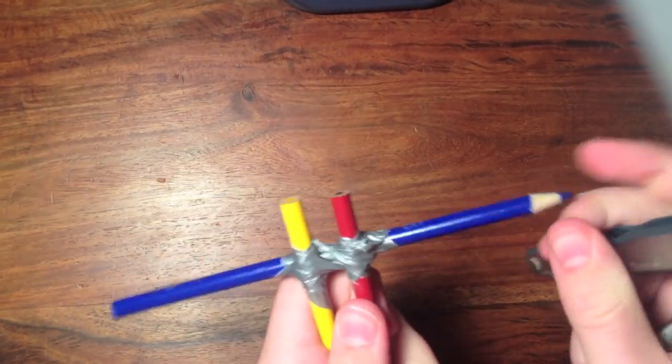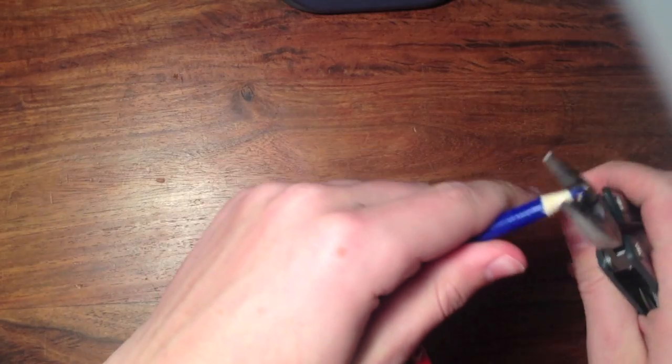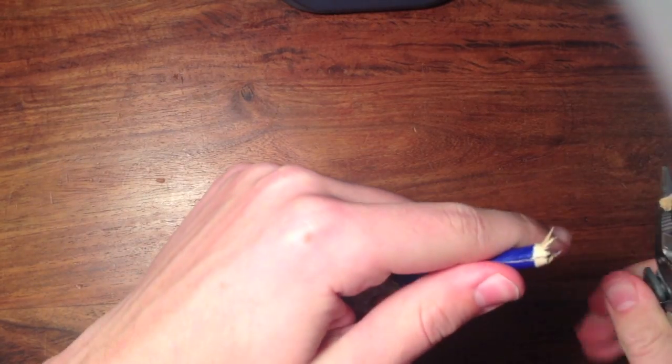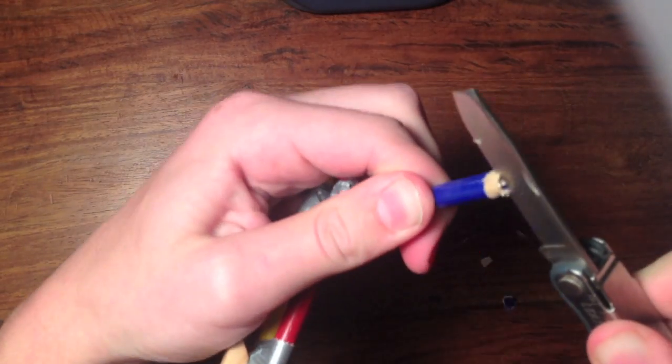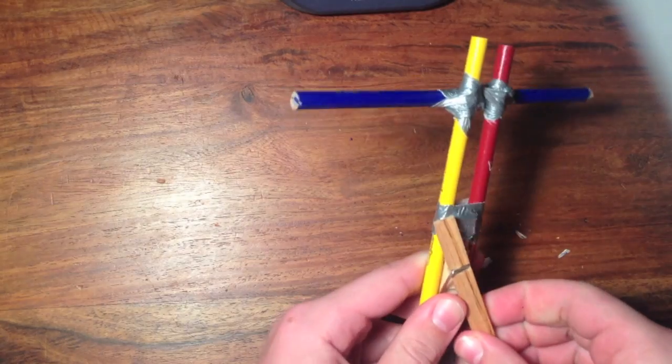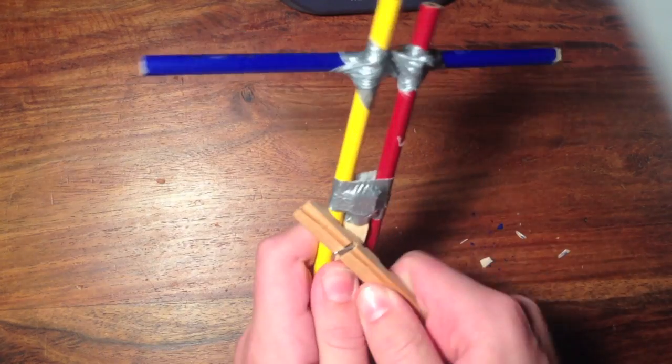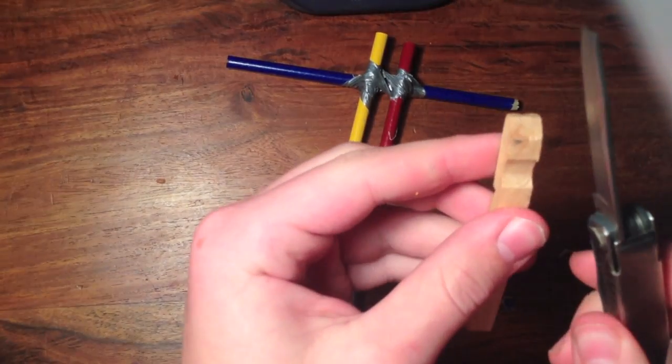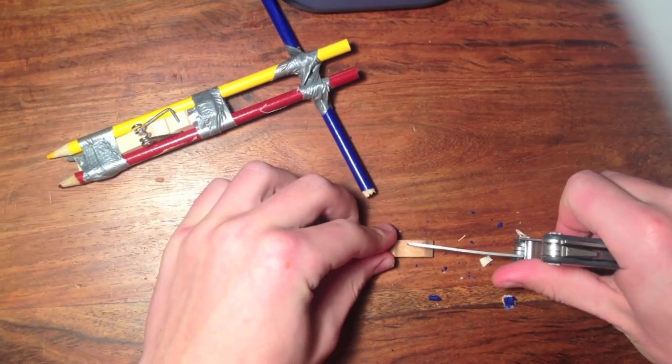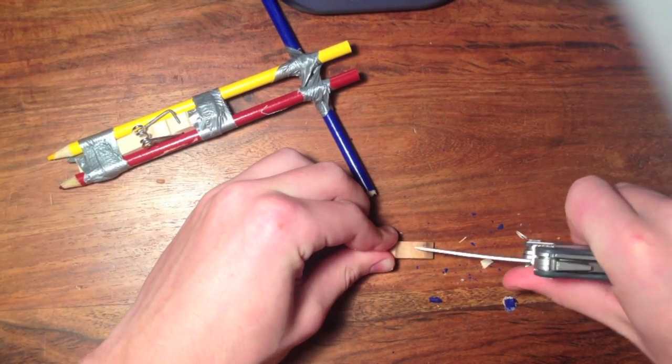Our next step is to break the end off of the pencil if it has an eraser. Then cut grooves into these pencils - be careful not to cut your finger. Now take off the top clothespin and use your knife to cut out a small groove in the tip.